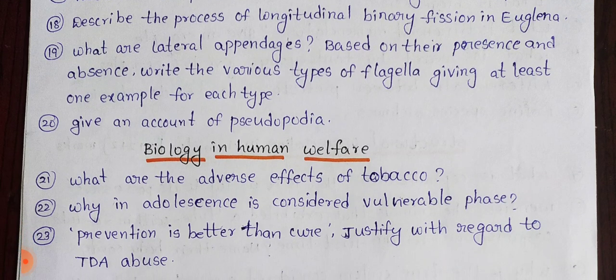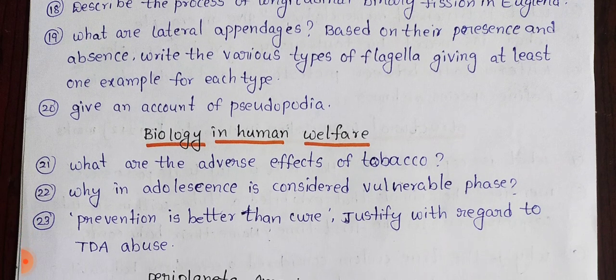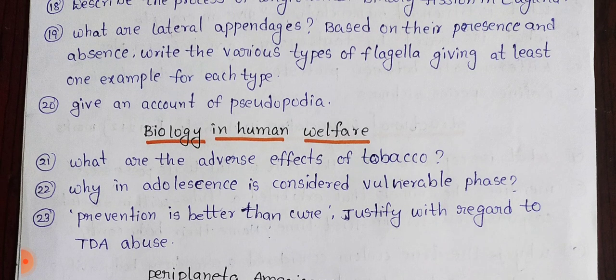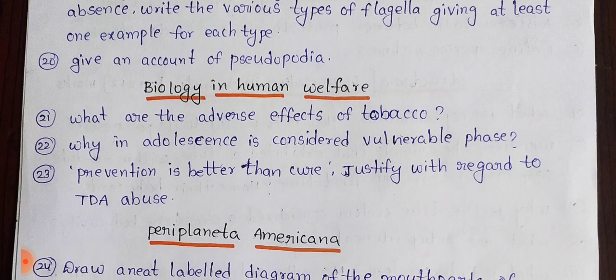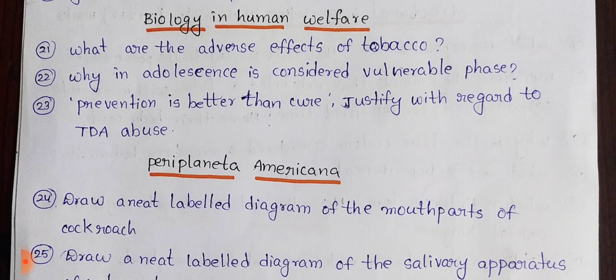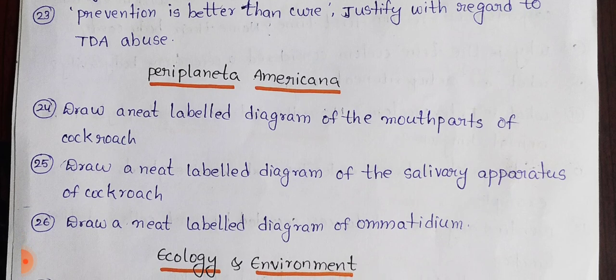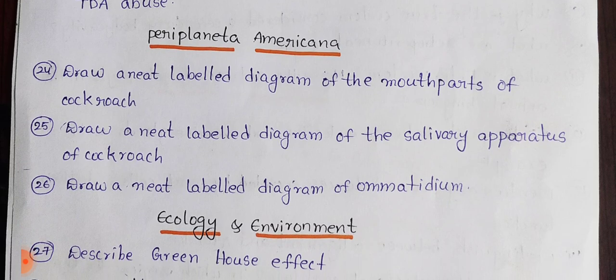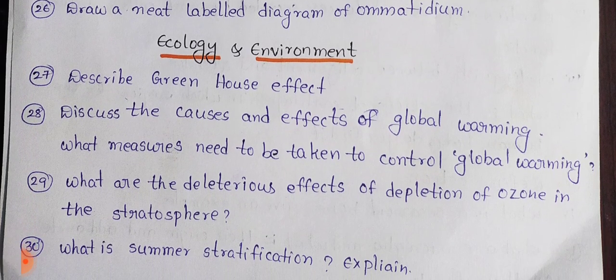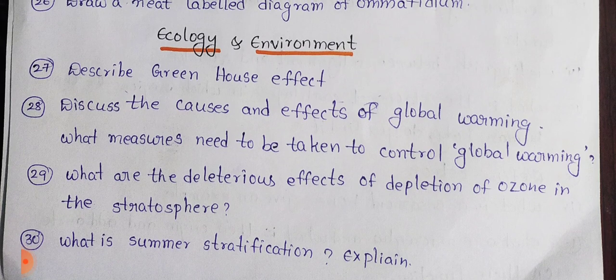Next, Biology and Human Welfare. In this section, you have 3–4 marks — questions 21, 22, 23. In this section, you have 3–4 marks — questions 24, 25, 26. In this section, you have 4–4 marks — questions 27, 28, 29. Okay, next page.